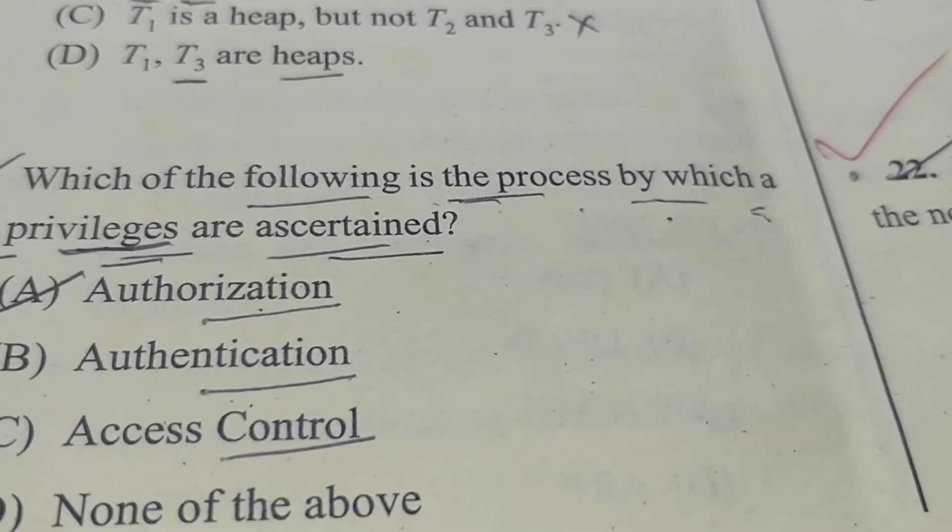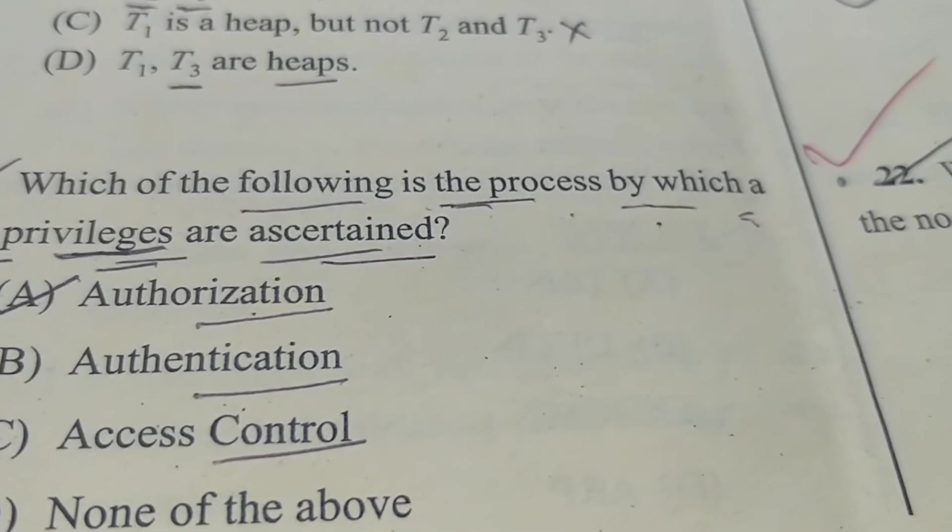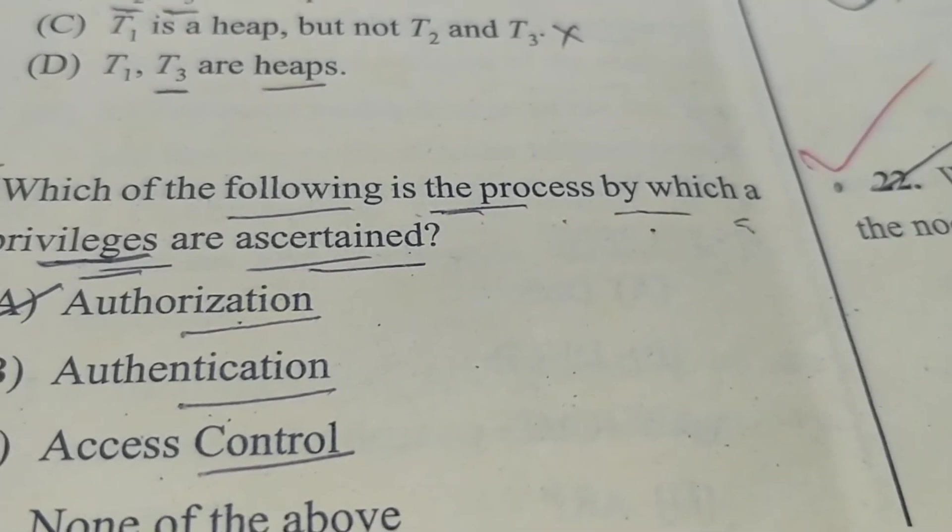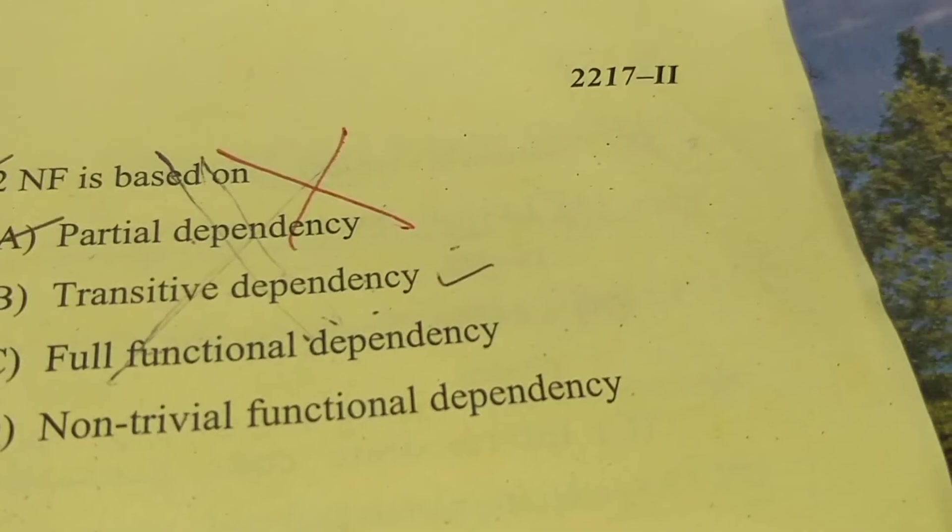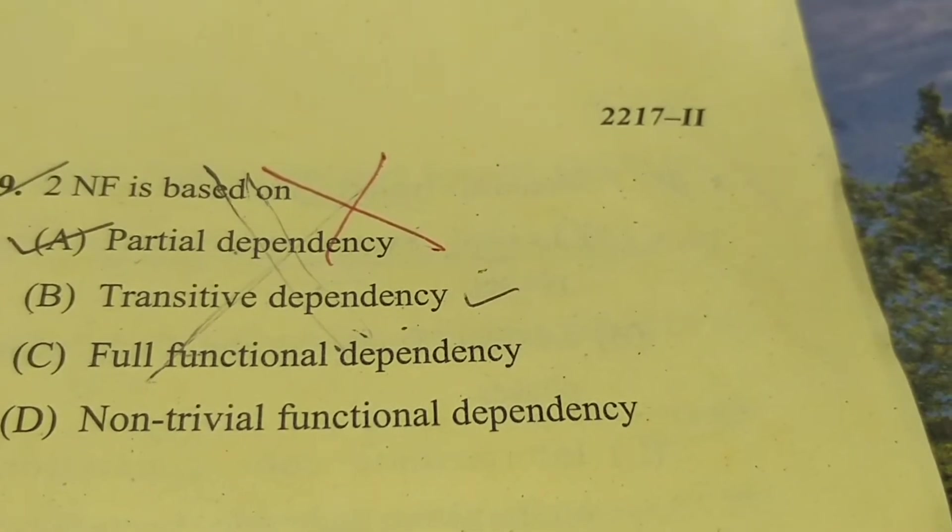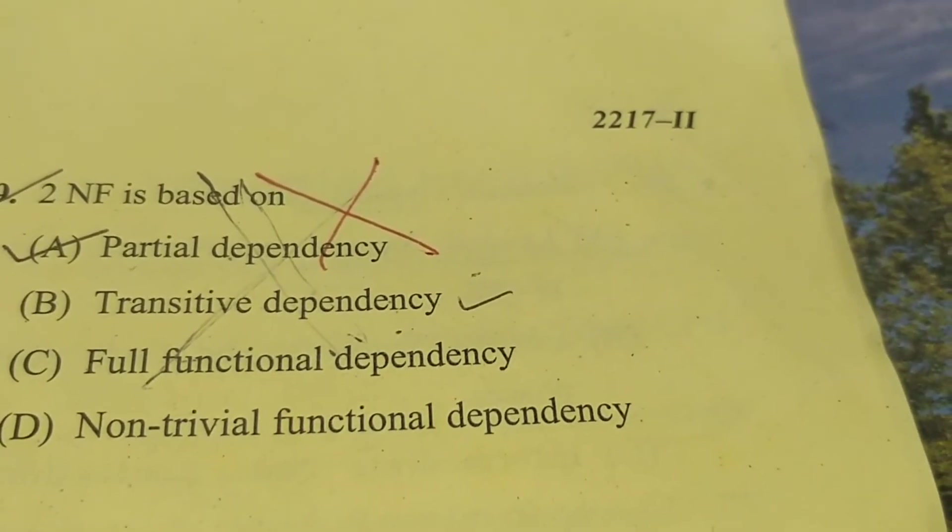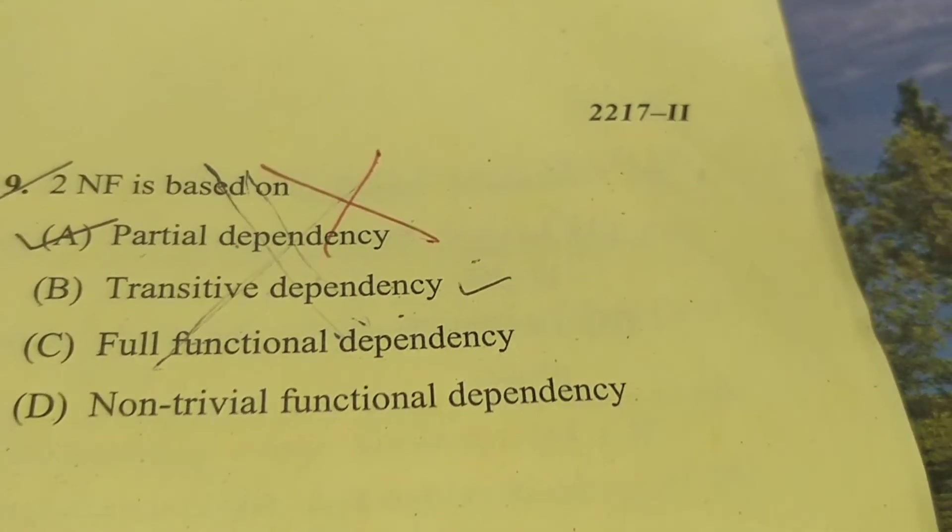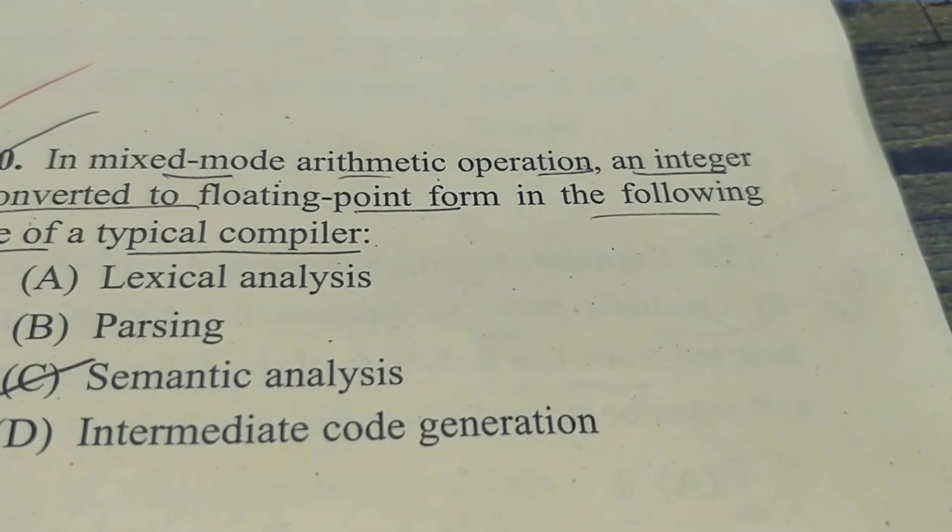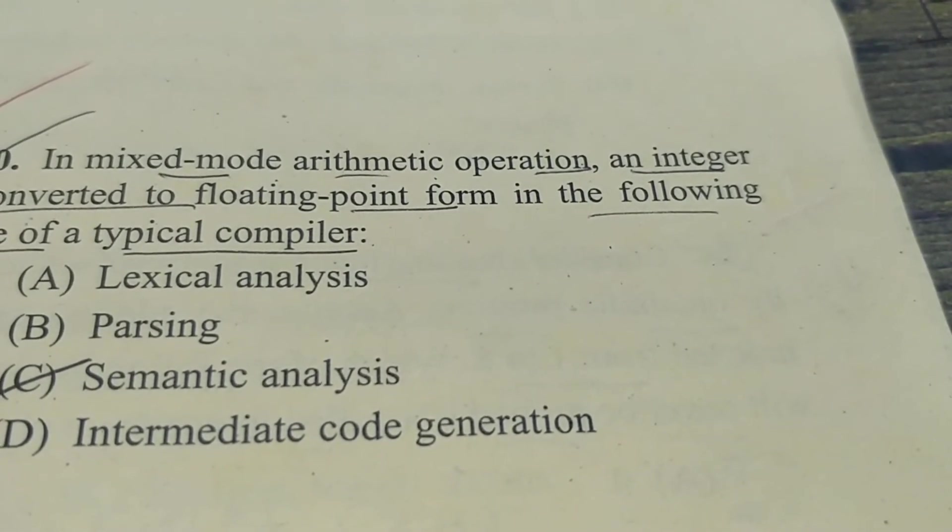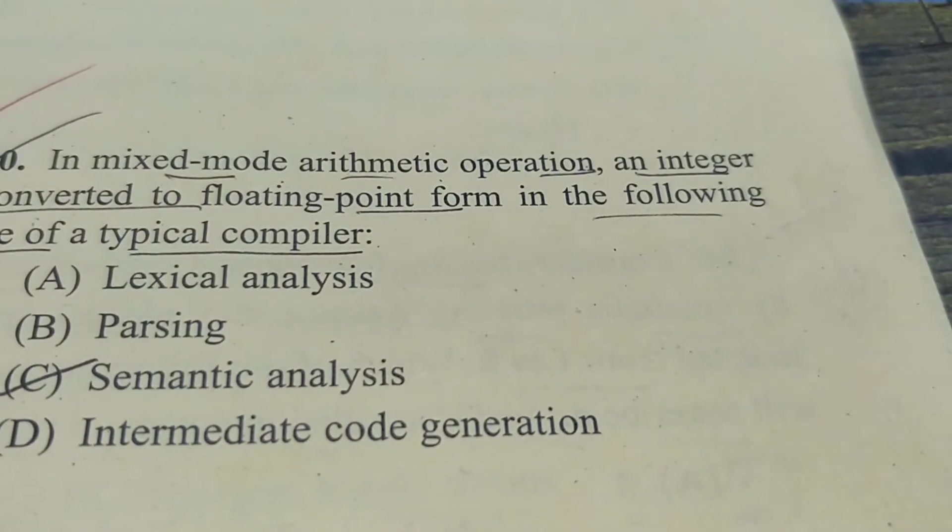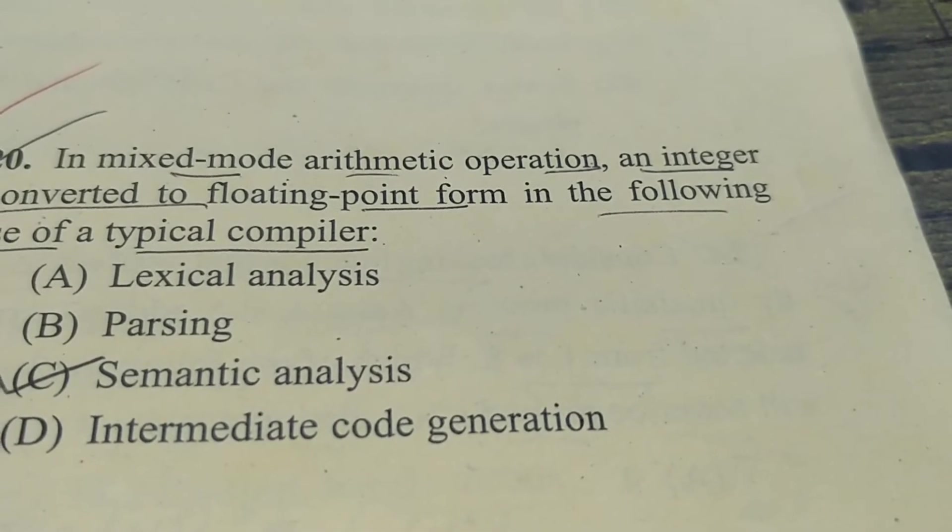Which one of the following is the process by which a user's privileges are asserted? Option A: authorization is the correct answer. Now question 19: 2NF is based on partial dependency, not transitive dependency, not full functional dependency. C is the correct answer. Now the 20: in mixed mode arithmetic operation, an integer is converted to floating point form in the following phase of a typical compiler. Lexical analysis, parsing, semantic analysis. C is the correct answer.